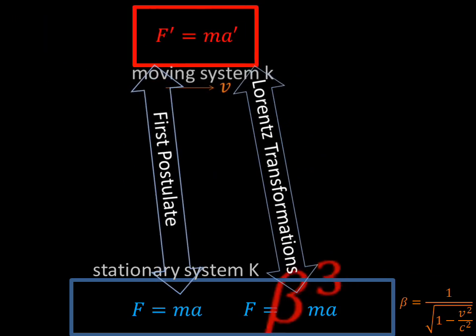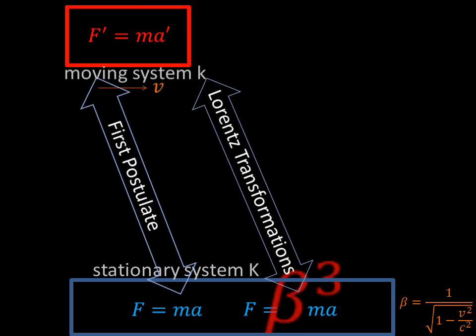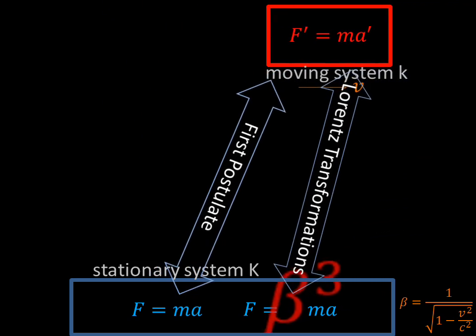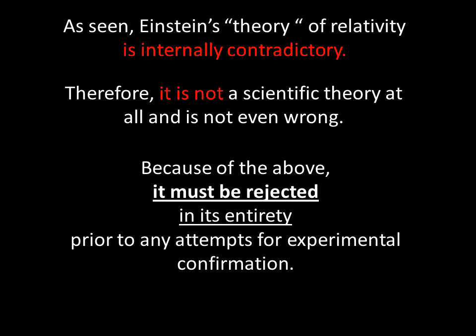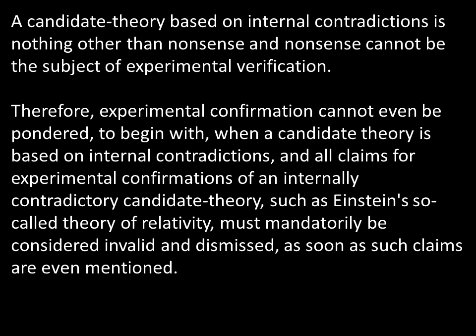The above leads to one general conclusion: Einstein's so-called theory of relativity is based on a fatal contradiction between its first postulate and the Lorentz transformations. As seen, Einstein's so-called theory of relativity is internally contradictory; therefore it is not a scientific theory at all and is not even wrong. Because of the above, it must be rejected in its entirety prior to any attempts for experimental confirmation. A candidate theory based on internal contradictions is nothing other than nonsense, and nonsense cannot be the subject of experimental verification.